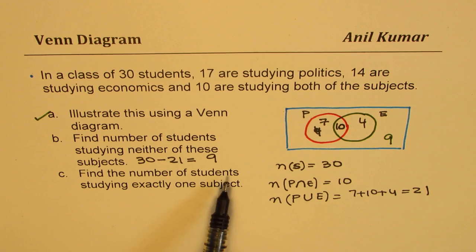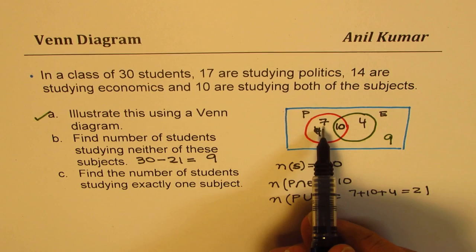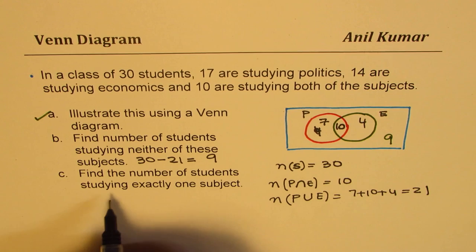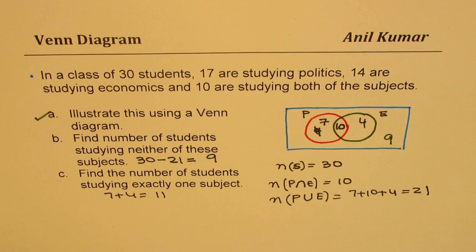Find the number of students studying exactly one subject. So only politics and only economics is 7 and 4. So the answer is 7 plus 4, which is 11, correct? So that is how you would actually answer this.